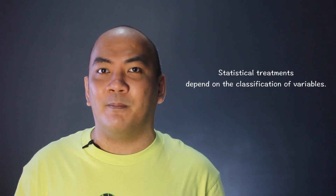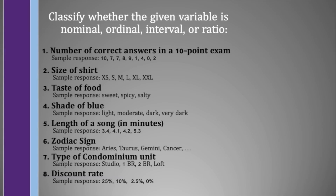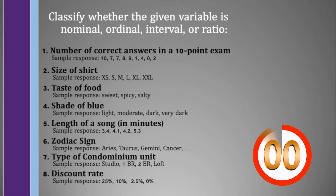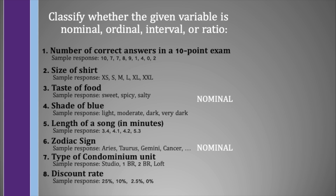In statistics, it is important that you can classify the variables correctly because the statistical treatment depends on the classification of variables. Given these eight variables, can you identify which one is nominal, ordinal, interval, and ratio? It is clear that numbers 3 and 6 are both nominal, since the taste of food cannot be arranged ascendingly or descendingly. Likewise, the zodiac signs may not be arranged ascendingly or descendingly — the zodiac signs are all on the same level. Further, numbers 2, 4, and 7 are all ordinal. The size of shirts has ranks, therefore we can arrange them from lowest to highest or vice versa.